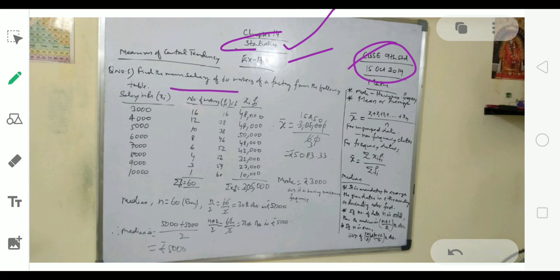This is the last topic in the statistics chapter. In question number five, we need to find the mean salary of 60 workers of a factory from the following table.